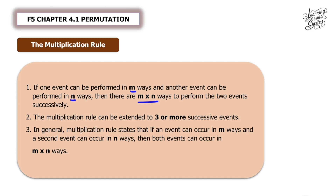Number 2, the multiplication rule can be extended to three or more successive events. Number 3, in general, the multiplication rule states that if an event can occur in m ways and a second event can occur in n ways, then both events can occur in m times n ways.